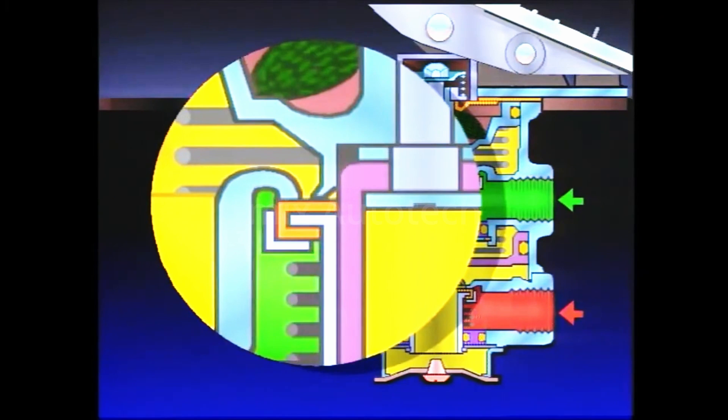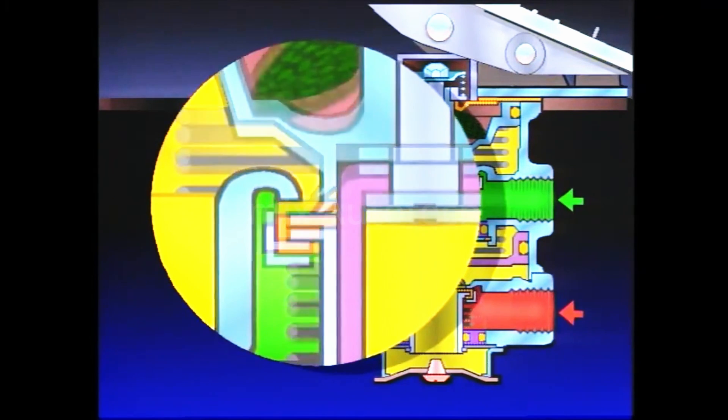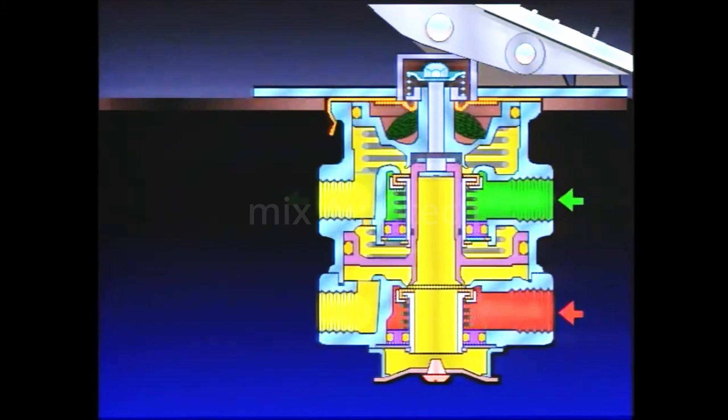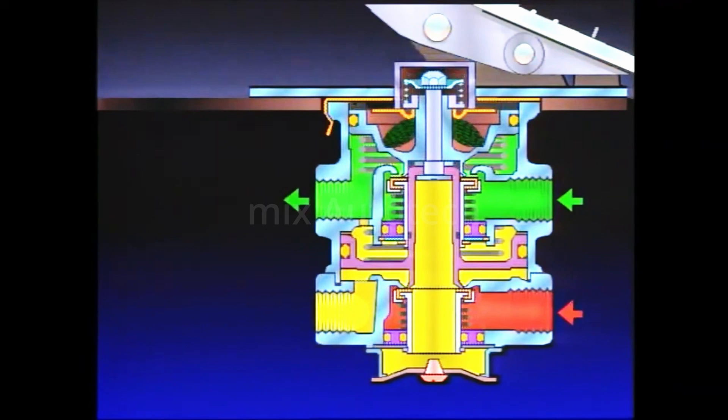As the exhaust valve closes, the primary inlet valve is moved off its seat, and air from the primary service reservoir flows out the primary delivery port.